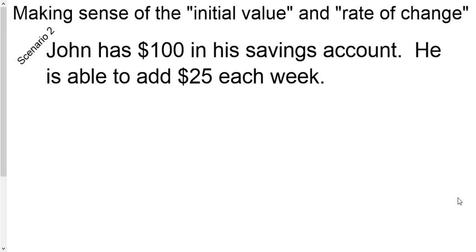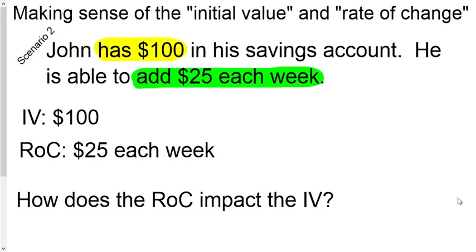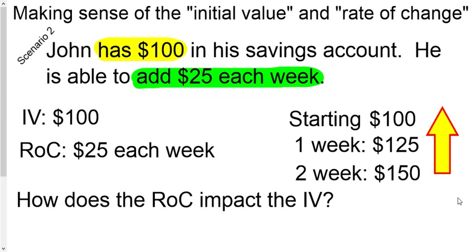John has $100 in his savings account and is able to add about $25 each week. What's your initial value? What do you start with? $100. What's happening as time goes on? Every single week he's adding $25 — that's your rate of change, $25 each week. In this case, you can see that it's actually making the initial value go up. So the rate of change can make your initial value go up or down.